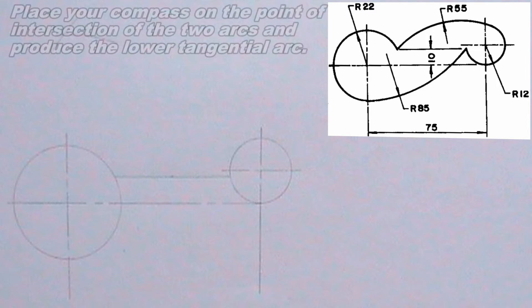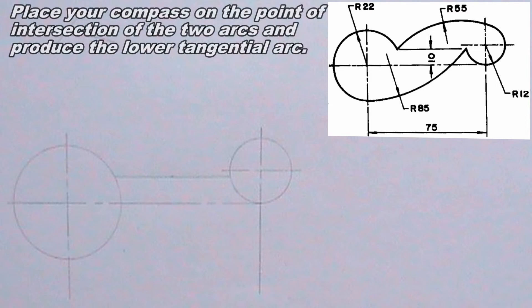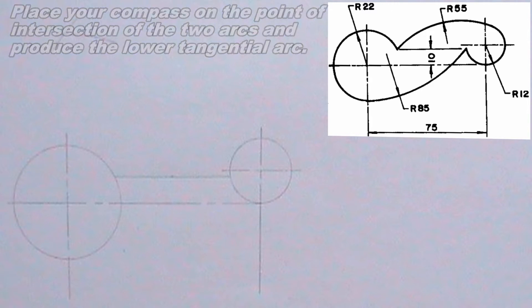Now I will produce the lower tangential arc by placing my compass on the point of intersection of the two arcs, using a radius of 85mm.